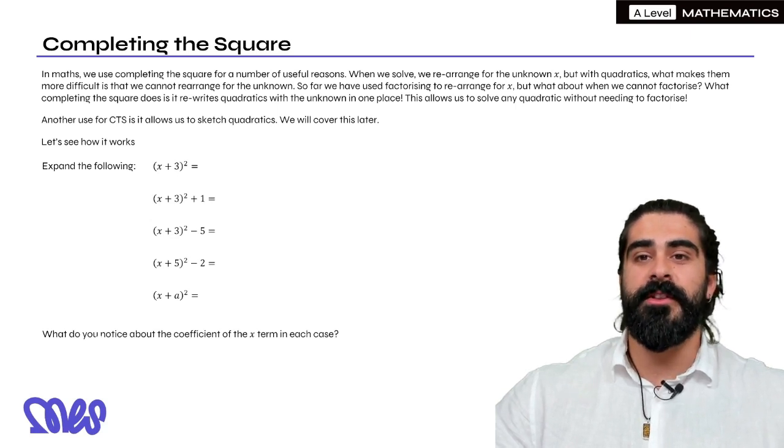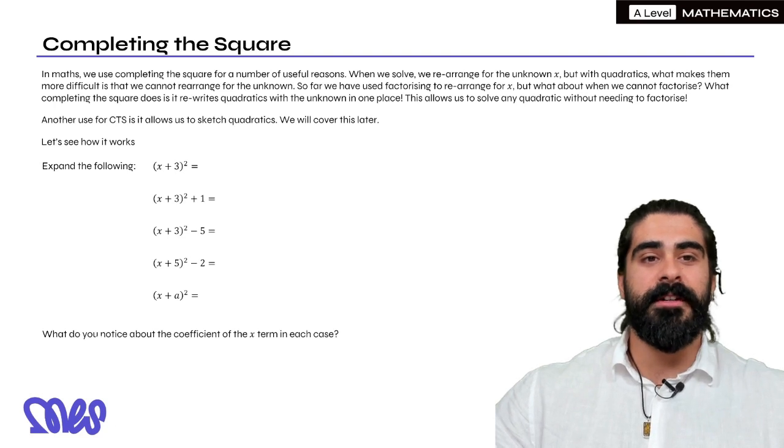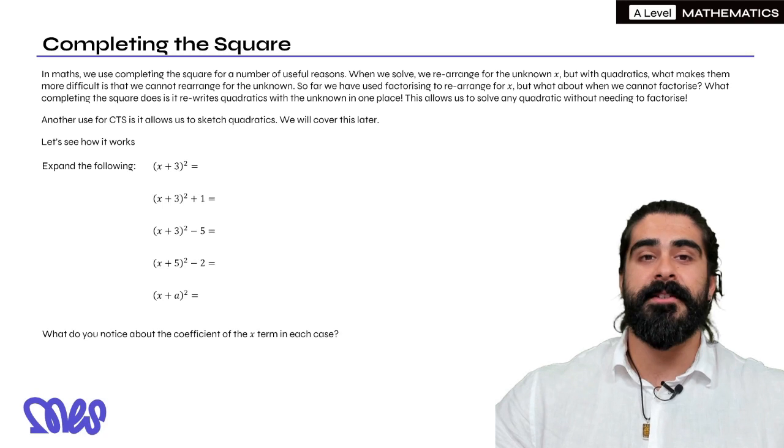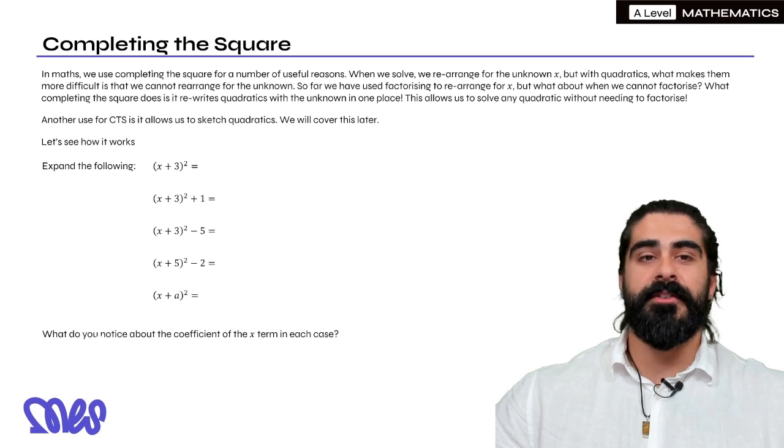When we solve we rearrange for the unknown X, but with quadratics what makes them more difficult is that we cannot rearrange for the unknown because we have X in multiple places. So far we've been using factorizing to rearrange for X, but what about when we can't factorize?